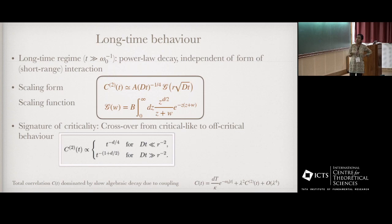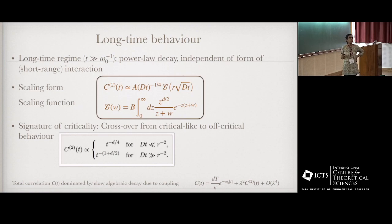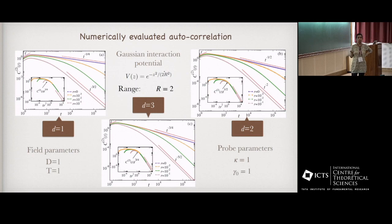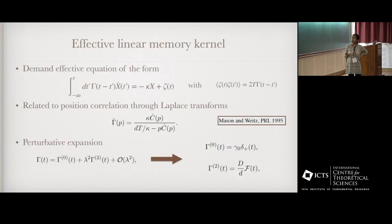Given any potential, we can numerically evaluate this, and in the long-time regime we can show that irrespective of the specific form of the interaction, it shows power-law decay. This is the scaling form of the correction to the two-point correlation. We can extract the long-time behavior explicitly: for times smaller than 1/r² — the parameter controlling criticality — we have a t^{−d/4} decay; for longer times we have a different power-law decay. As we approach criticality there is a crossover. Remember the free particle had purely exponential correlation — as soon as coupling is turned on, we see this power-law decay instead.